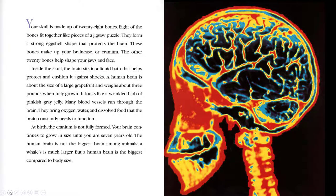Your skull is made up of 28 bones. Eight of the bones fit together like pieces of a jigsaw puzzle. They form a strong eggshell shape that protects the brain. These bones make up your brain case, or cranium. The other 20 bones help shape your jaws and face. Inside the skull, the brain sits in a liquid bath that helps protect and cushion it against shocks. A human brain is about the size of a large grapefruit and weighs about three pounds when fully grown.